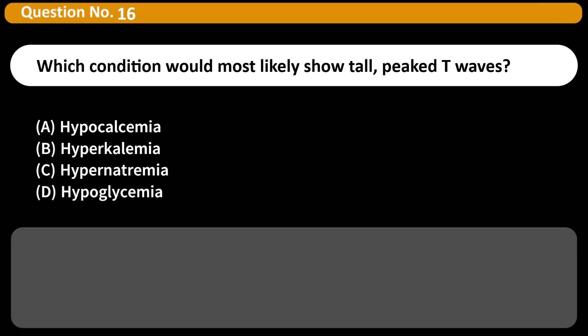Which condition would most likely show tall, peaked T waves? A. Hypocalcemia B. Hyperkalemia C. Hypernatremia D. Hypoglycemia Answer B. Elevated potassium levels, hyperkalemia, produce tall, peaked T waves.